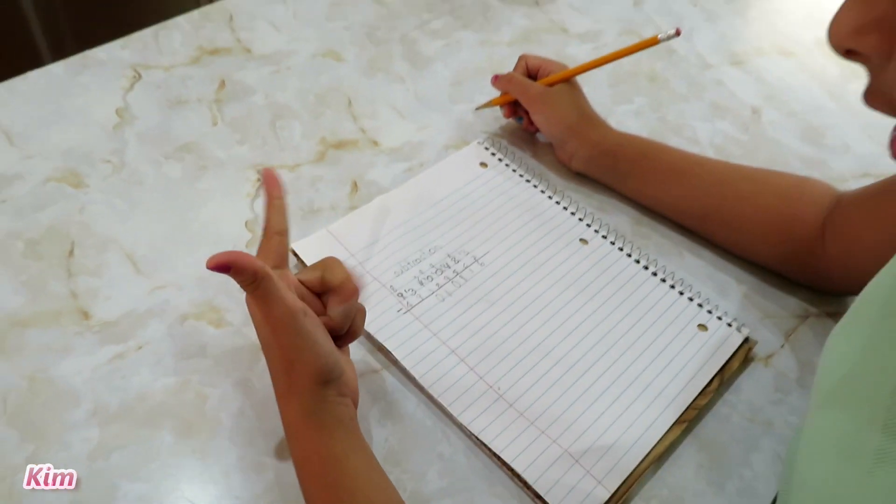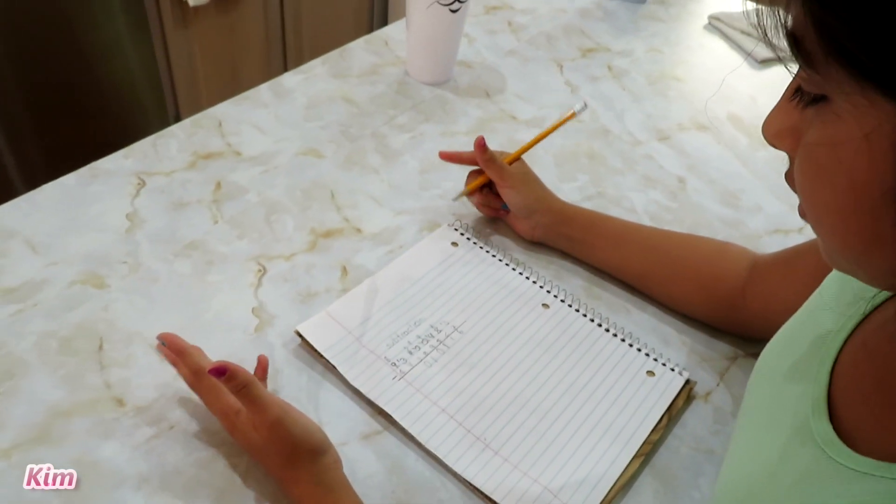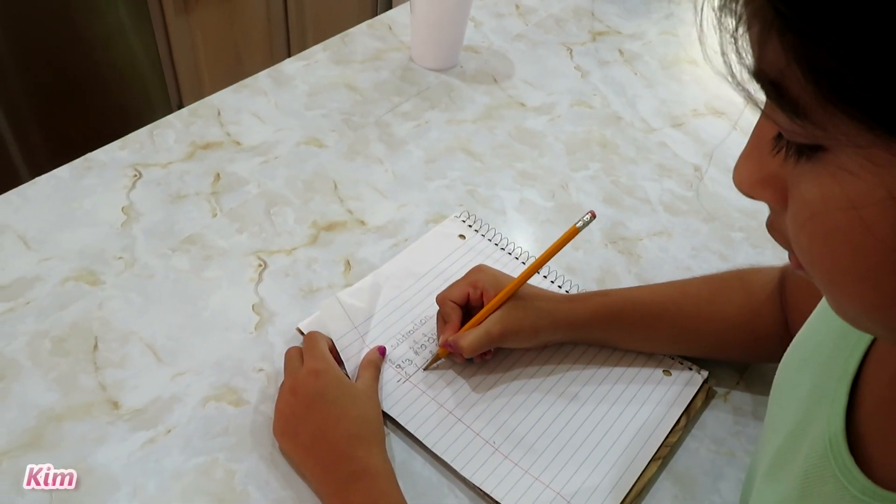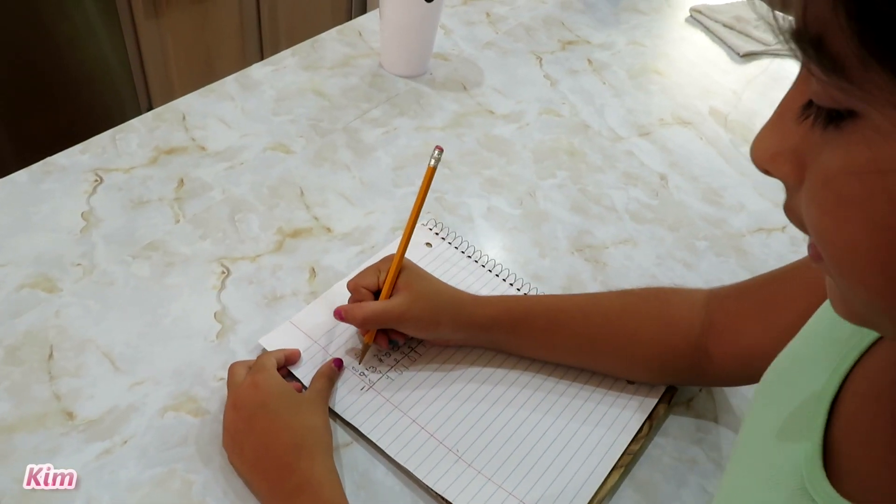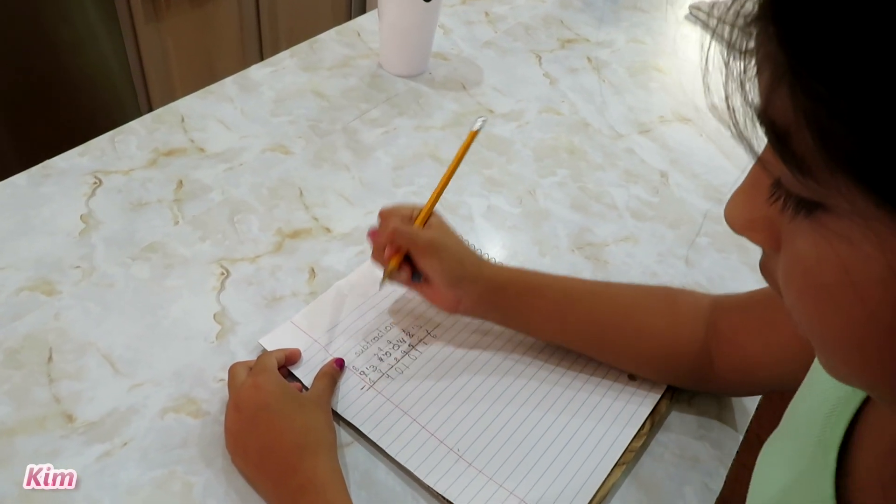13, 12, 11, 10, 9, 8, 7, 6, 5, 4. It turns into a 4. The answer is 4. Now we have 8 minus 4. It's 4.